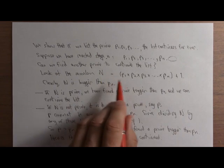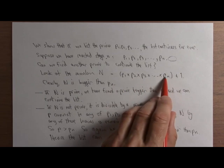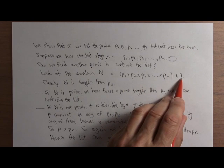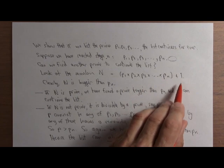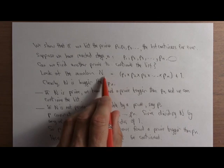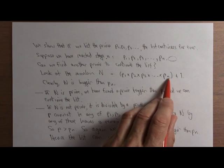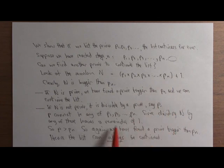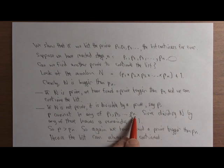If you divide N by any of these primes, you're left with a remainder of 1. So the prime that divides N can't be any of these. It must be a different one. If it's a different one, it's bigger than pn. So again, we've found a prime that's bigger than pn.